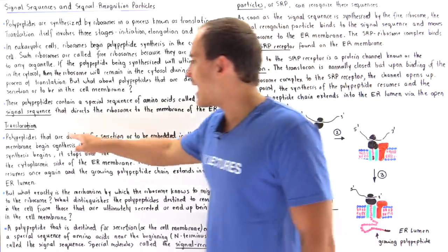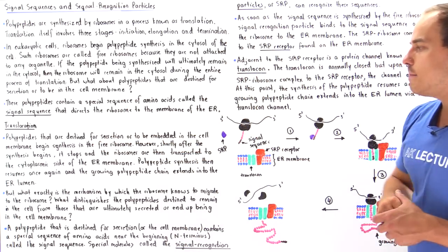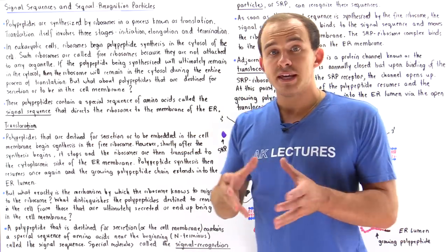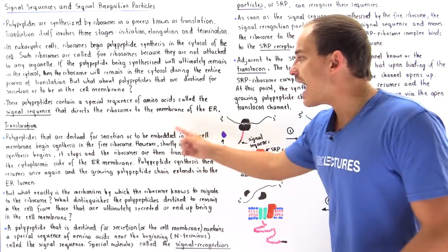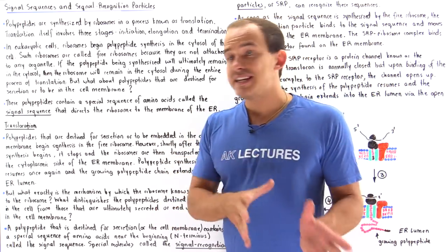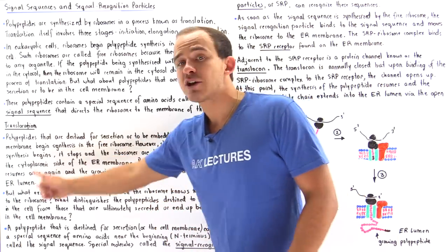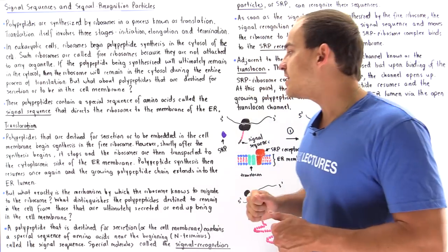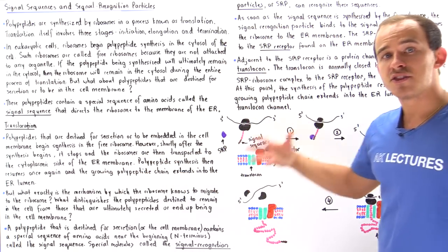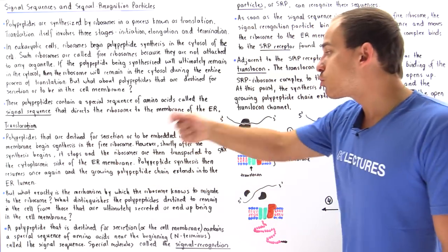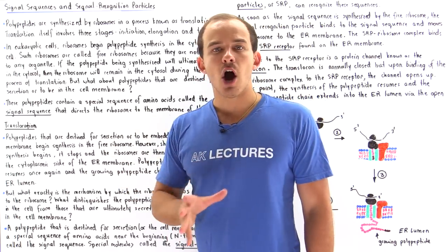Polypeptides destined for secretion or to be embedded in the cell membrane begin synthesis in the free ribosome. However, shortly after synthesis begins, it stops because the ribosomes are transported to the cytoplasmic side of the endoplasmic reticulum's membrane. Polypeptide synthesis then resumes, and the growing polypeptide chain extends into the ER lumen.